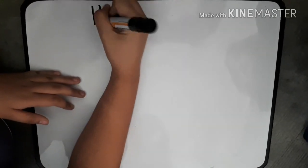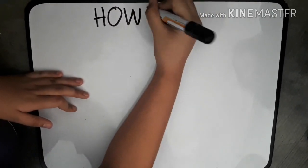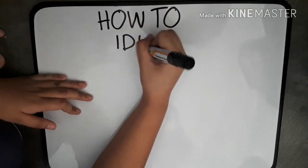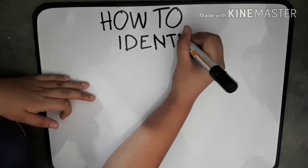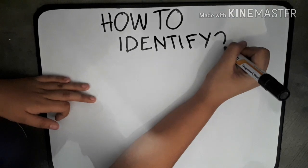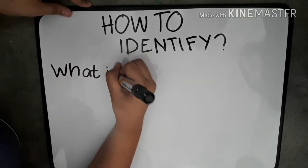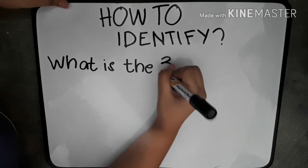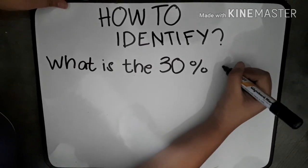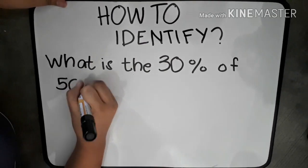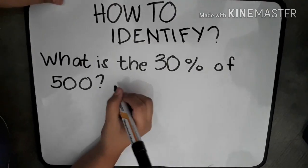Before anything else, let's learn how to identify which is missing real quick. If the question is what is 30% of 500, then you are missing the percentage.